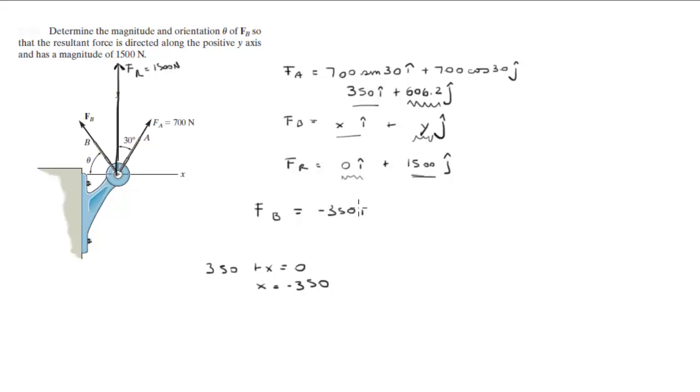Now for the y component, you know that 606.2 plus y is equal to 1500, so y is equal to 893.8, so that's 893.8 in the j direction.